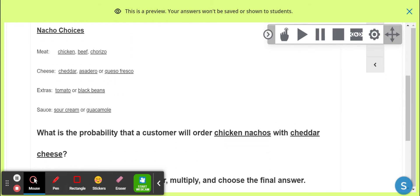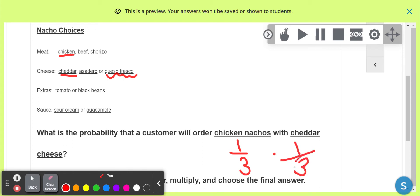So if I have this one which is about nachos, and it says ordering chicken nachos with cheddar cheese, chicken is 1 of the 3 types of meat, so chicken would be 1/3. Cheddar is 1 of the 3 types of cheese, this is all 1 together. And so I'd have to multiply 1/3 times 1/3 to get the final answer.